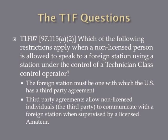Which of the following restrictions apply when a non-licensed person is allowed to speak to a foreign station using a station under the control of a technician class control operator? The answer is the foreign station must be one with which the U.S. has a third-party agreement. Third-party agreements allow non-licensed individuals to communicate with a foreign station when supervised by a properly licensed amateur, as long as that country has an agreement with the United States to allow third-party traffic.